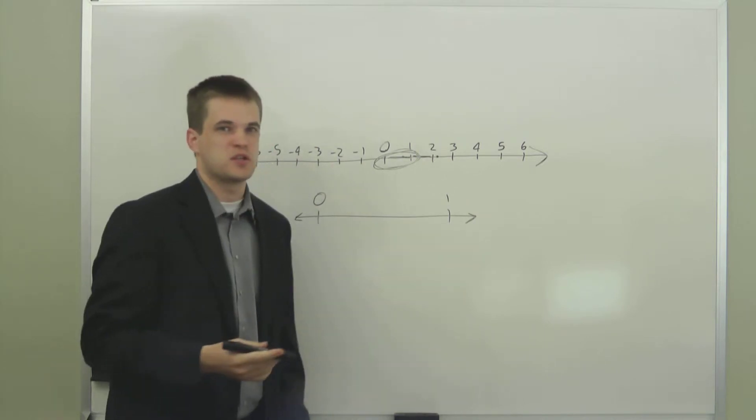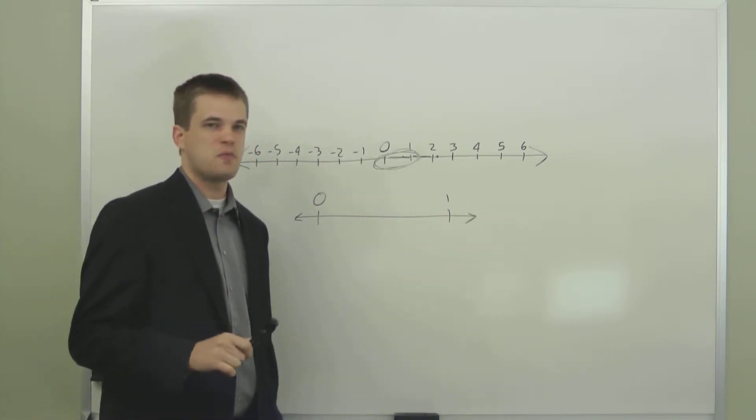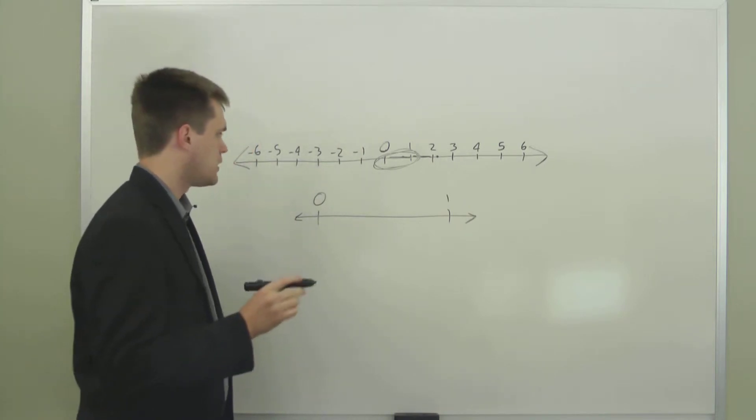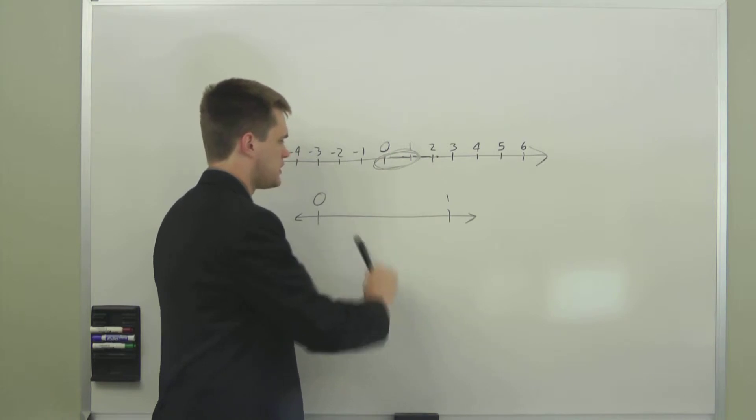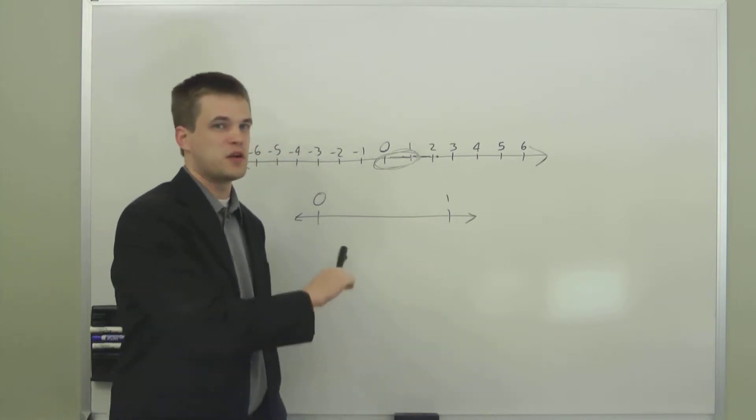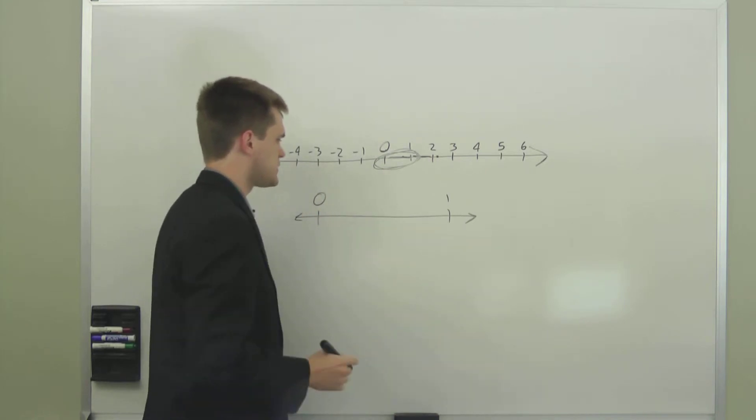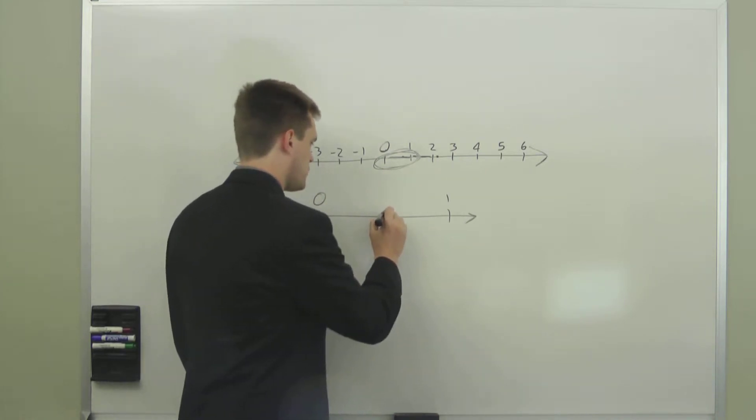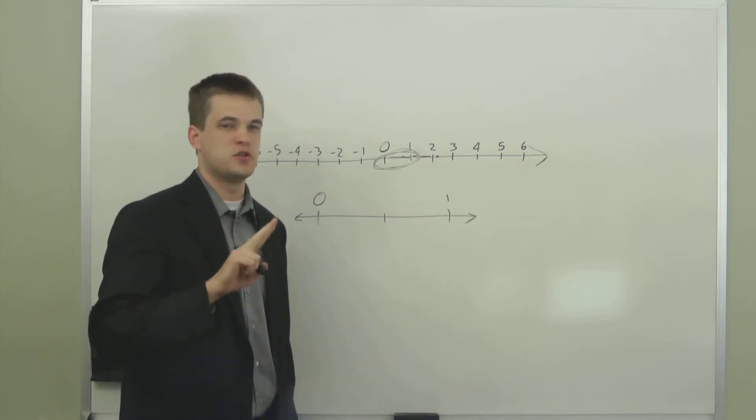To describe this, as I mentioned, we have decimals and we have fractions. I'll describe fractions first. A fraction is essentially a way to divide up this section inside of here into equally spaced segments. If we put one right in the middle, we've cut it in half or into two pieces.